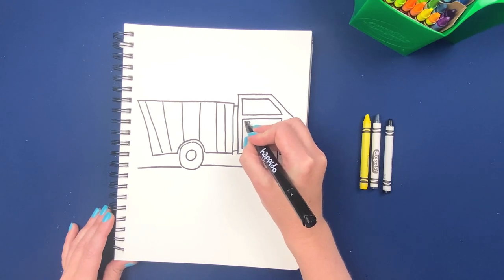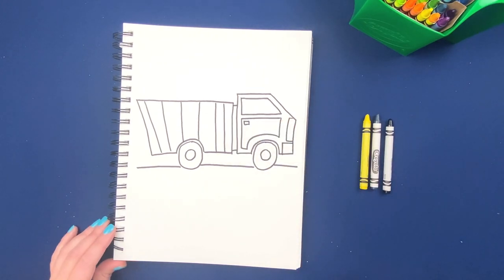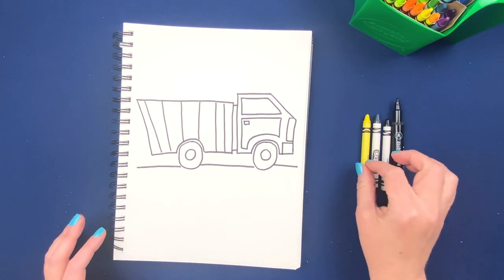We just need one little thing, a handle for the door so they could get in. All right. Let's get coloring. Grab your crayon.